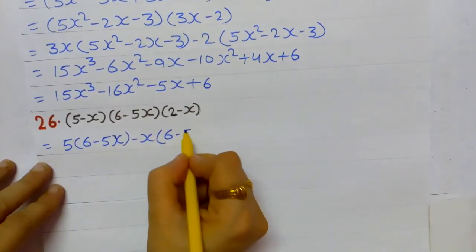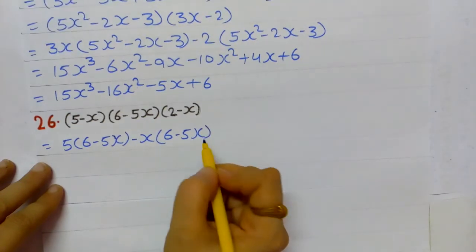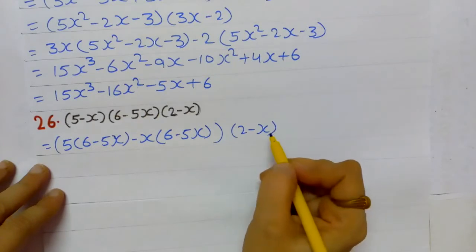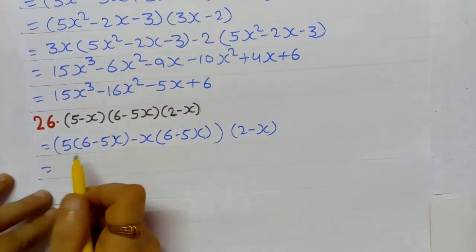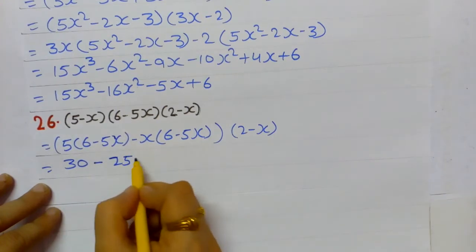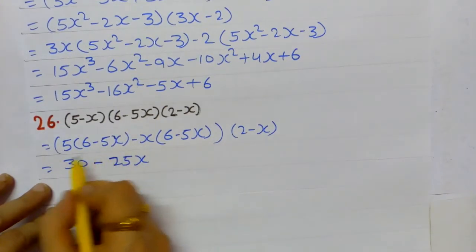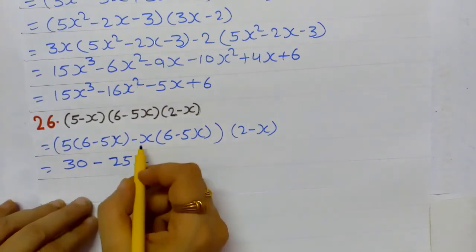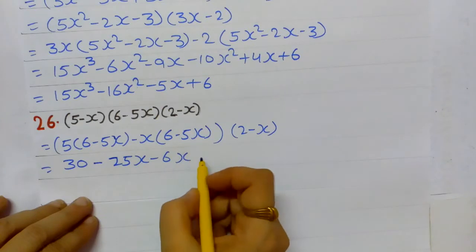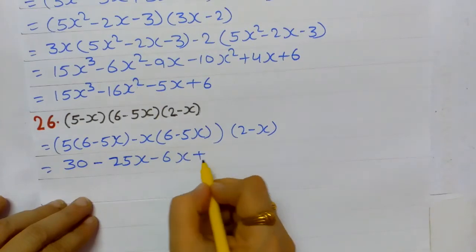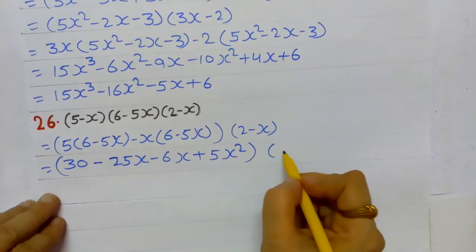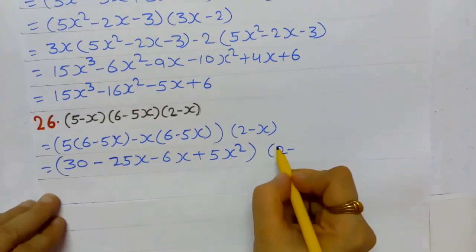Breaking the 1st bracket: 5 × (6 - 5x) minus x × (6 - 5x), with the 3rd bracket (2 - x) as it is. Multiplying: 5 × 6 = 30; 5 × (-5x) = -25x; (-x) × 6 = -6x; (-x) × (-5x) = +5x².